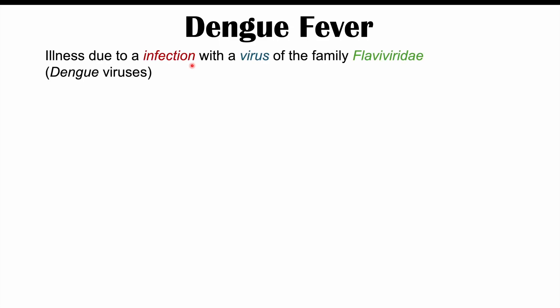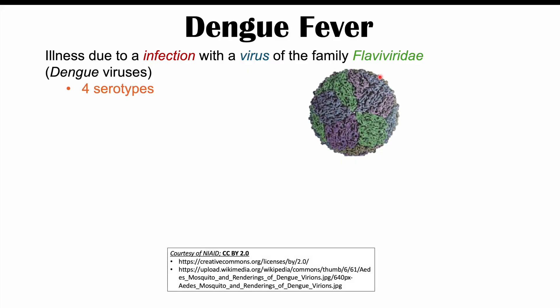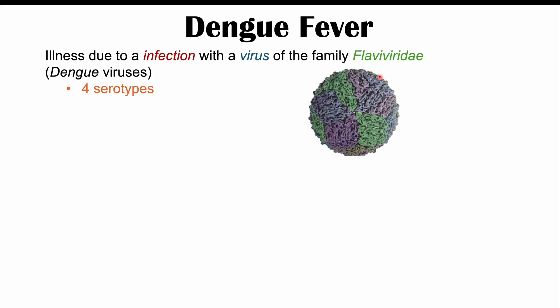Dengue fever is an illness due to infection with the dengue virus, which is a virus in the family of viruses known as the Flaviviridae viruses. There are four different serotypes of dengue virus, and this is going to be important when we talk about some of the complications that can occur from a dengue virus infection.